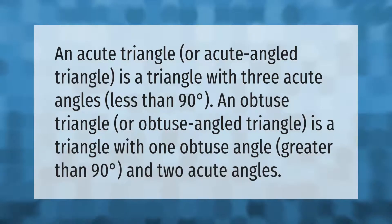An acute triangle, or acute-angled triangle, is a triangle with three acute angles (less than 90°). An obtuse triangle, or obtuse-angled triangle, is a triangle with one obtuse angle (greater than 90°) and two acute angles.